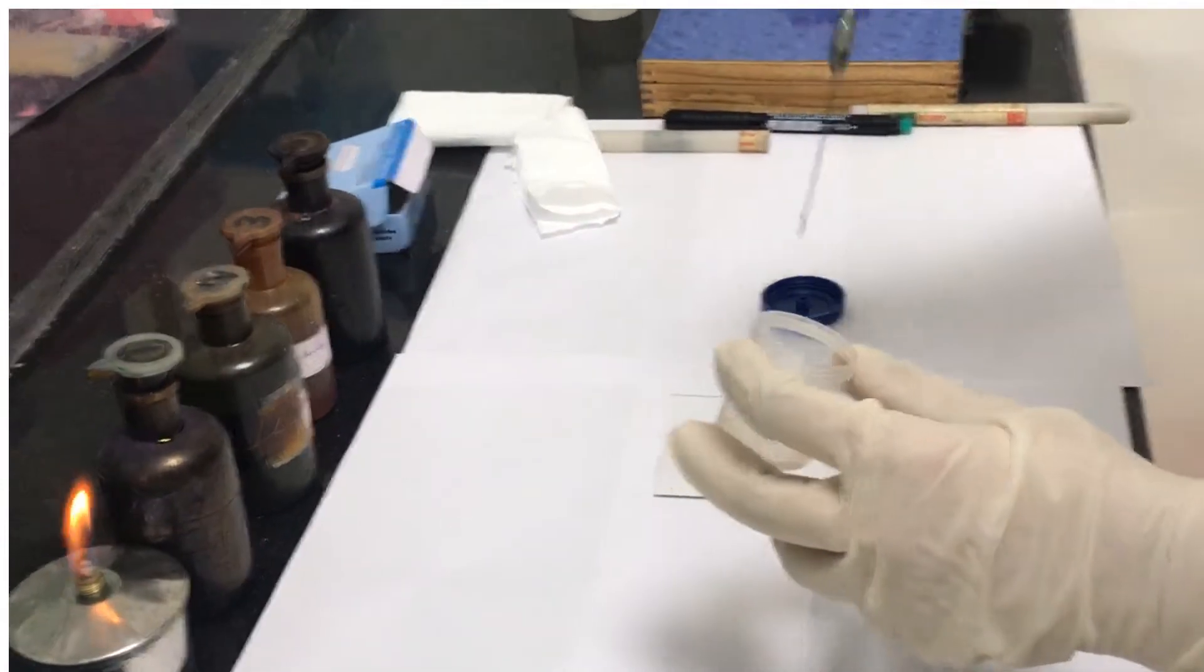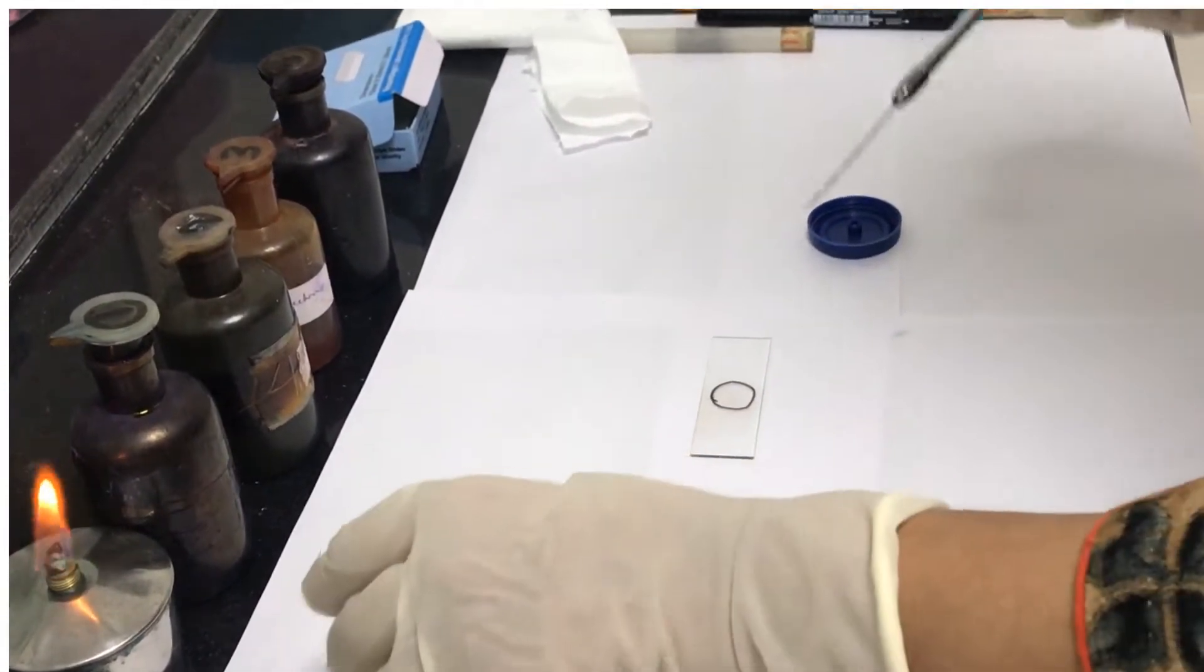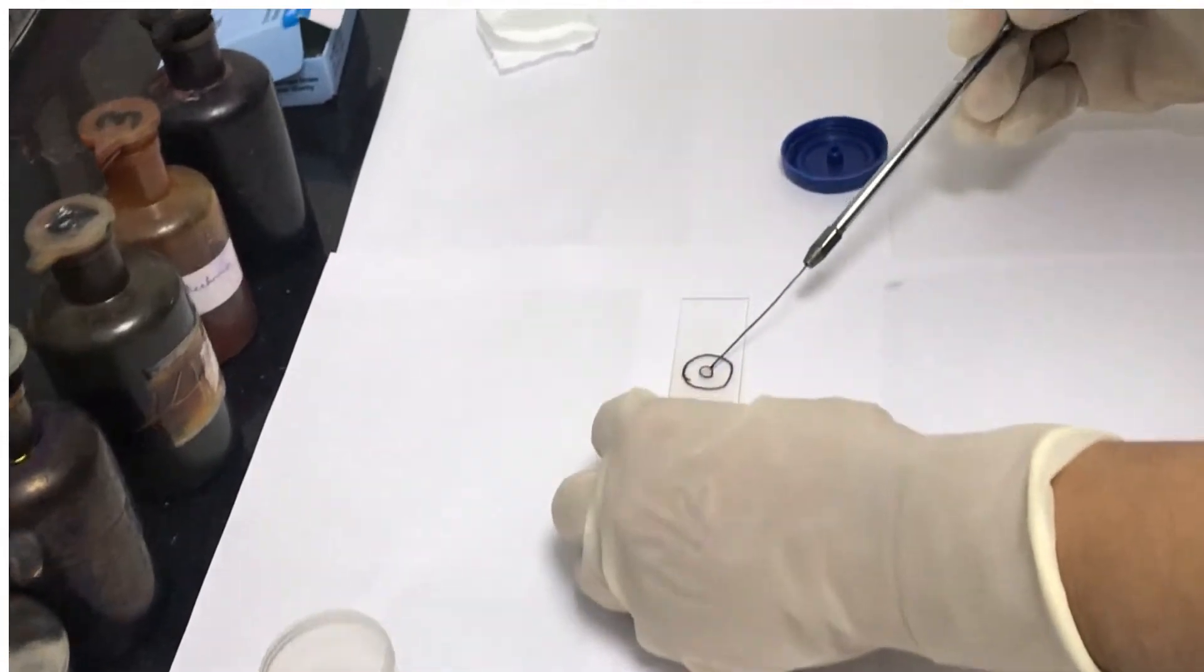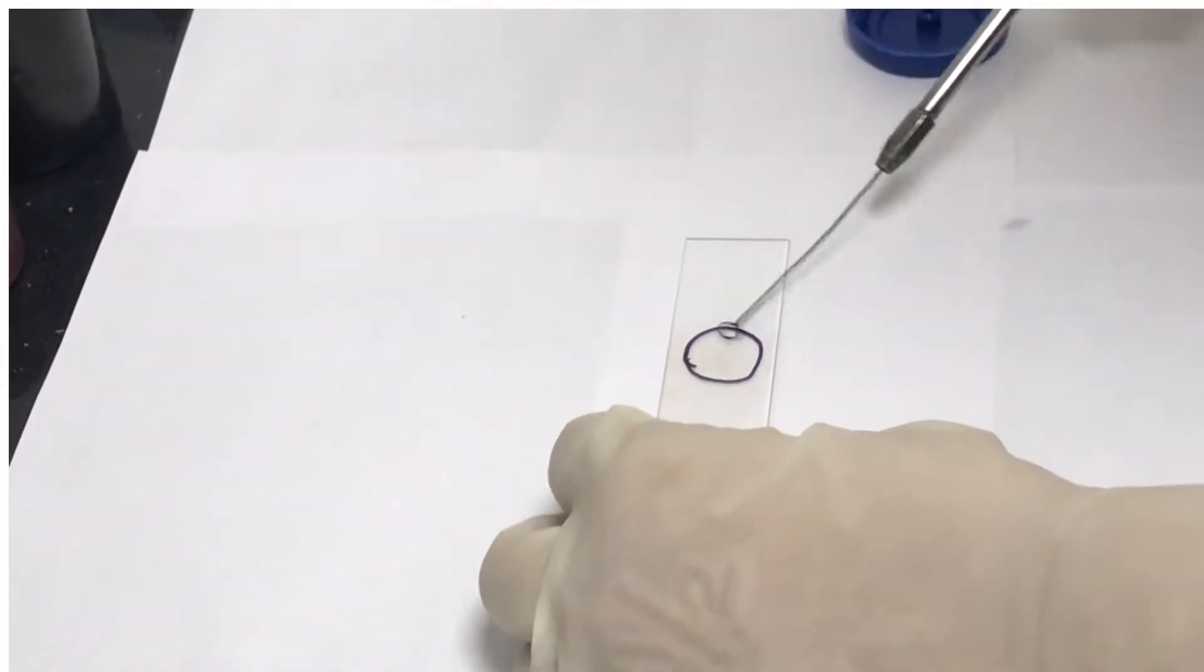With the help of a sterile cool loop, pick up a small amount of bacterial sample and gently stir it into a drop of water on the slide to create an emulsion.